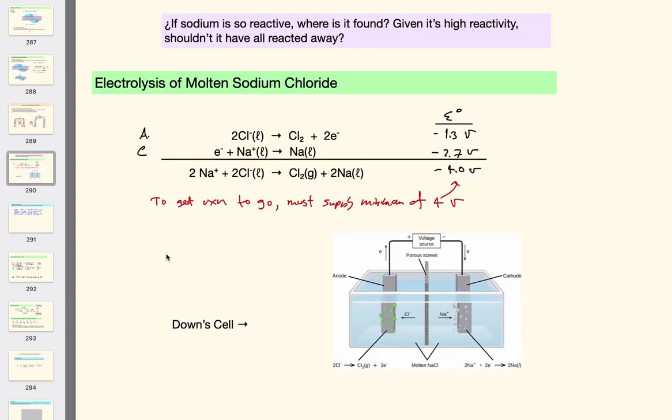Probably one of the most famous electrolytic reactions is called a down cell. And it's the process by which we make sodium and chlorine. These are both very reactive chemicals. Of course sodium is so reactive it will even react with water and the moisture in the air. You're not going to go out and dig up sodium from somewhere. It's just too reactive. It has to be made and then it has to be very carefully stored.